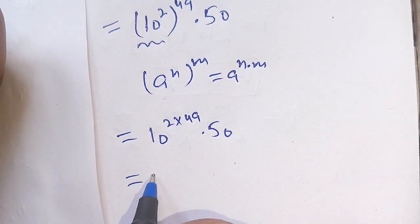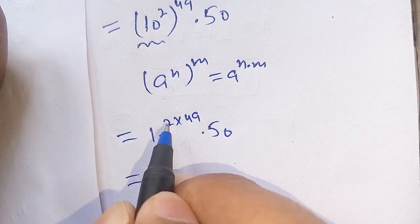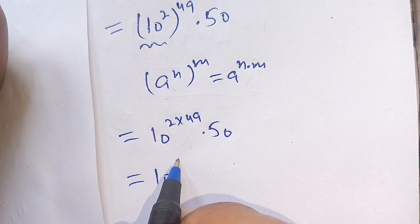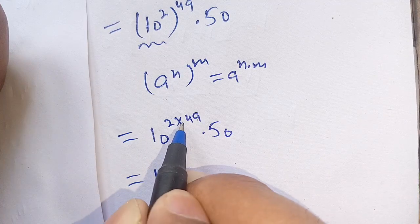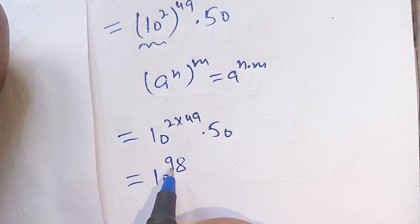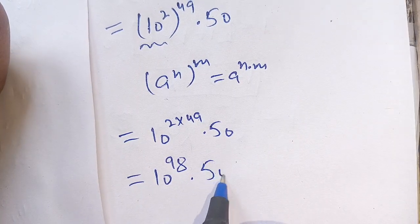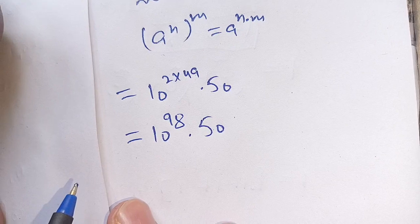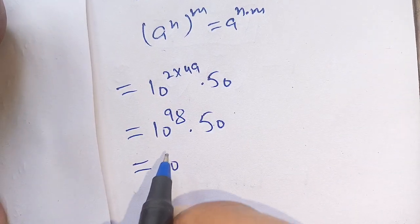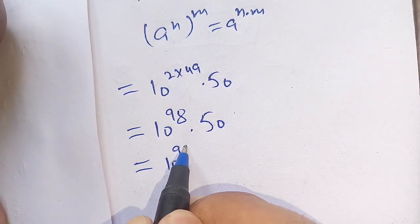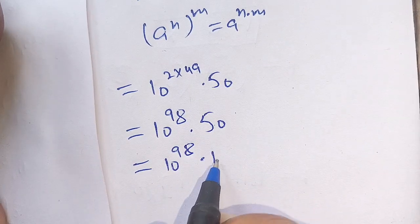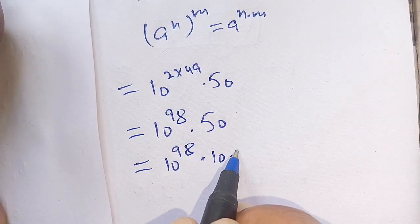Now 2 times 49 equals 98, and 98 times 50 gives us 10 raise to power 98 times 50. We can write 50 as 10 times 5, giving us 10 raise to power 98 times 10 times 5.